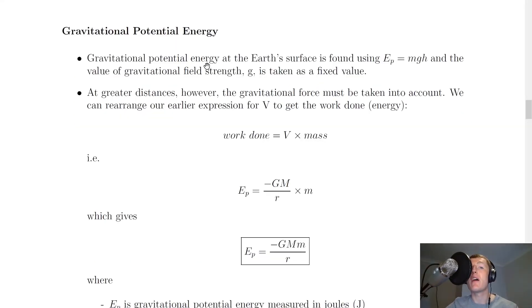We're now going to take a look at gravitational potential energy, which we've already kind of touched on. But it says that gravitational potential energy at the earth's surface is found using the old classic equation Ep equals mgh, which you've seen at national 5 and higher level. And the value of gravitational field strength g is taken as a fixed value. At greater distances, however, the gravitational force must be taken into account. We can rearrange our earlier expression for V to get the work done, i.e. the energy.